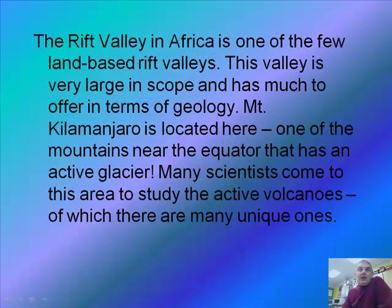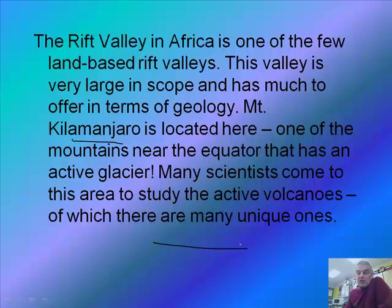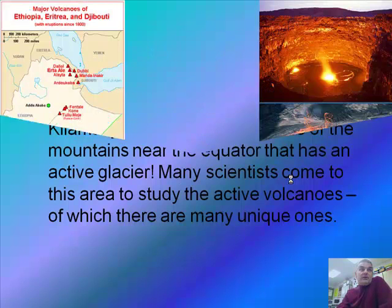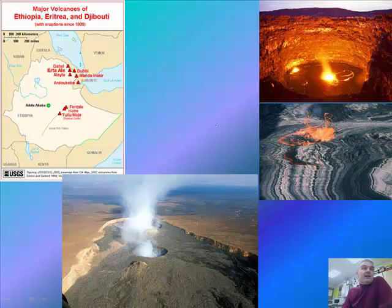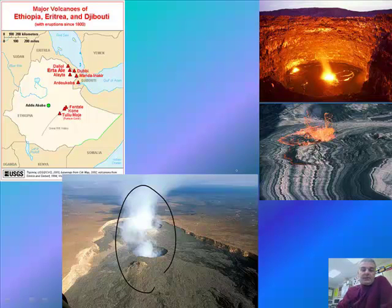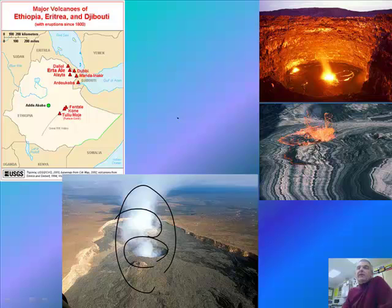Let's talk about the Rift Valley of Africa. It is one of the few land-based rift valleys. It's very large in scope and has much to offer in terms of geology. Mount Kilimanjaro is located here — one of the mountains near the equator with a glacier because the mountain is so tall. In the Rift Valley of Africa, we see volcanoes, and here are pictures of some of them along with their calderas and magma chambers.